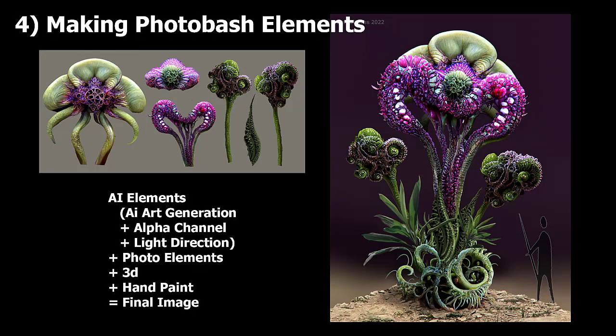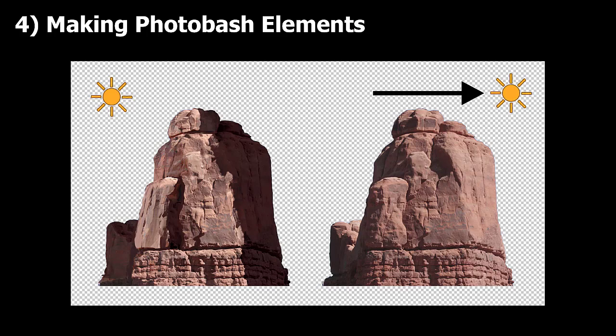Number four is making photobash elements. Most concept artists use combinations of photo elements, 3D, and hand painting in Photoshop or another paint app to arrive at their final concept — a technique I like calling the digital collage. Adding AI elements in the same way that we add photo elements to a concept is a great way to incorporate AI into your image. Having options to create just elements, maybe with an automatic alpha channel, would be super helpful. Instead of taking a photo of a tree and extracting it from the background, it would be far quicker to ask an AI for a photoreal tree, have it generated already with an alpha, and give it a lighting direction to match the lighting in your final painting — so no more need for relighting photographs.